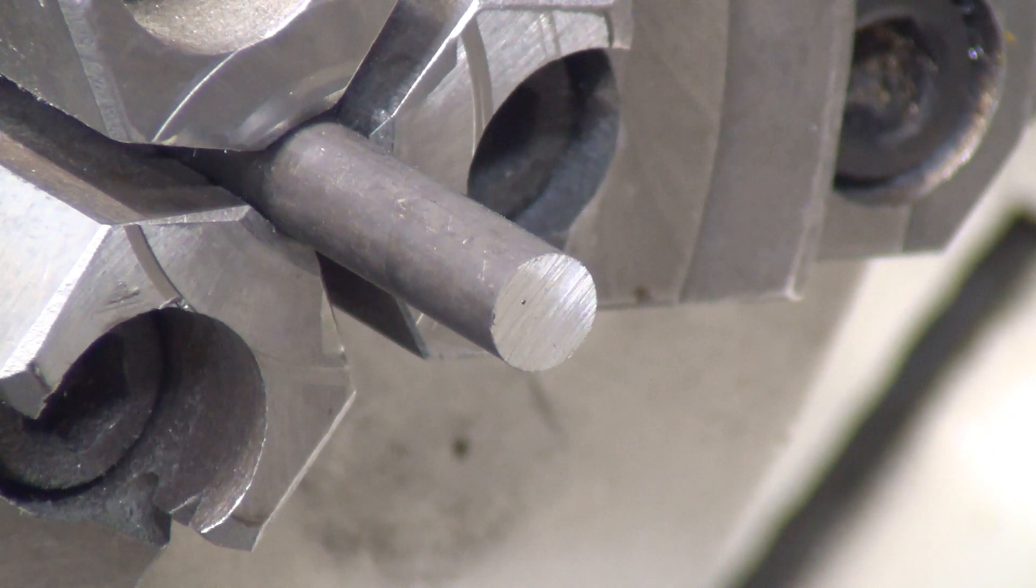Then on the final pass, I changed that to—I changed it to 1800 RPM and four thou per rev, four thousandths of an inch per rev, to get that final finish. And it really cleaned up the ball on them. So let's see how well it records.